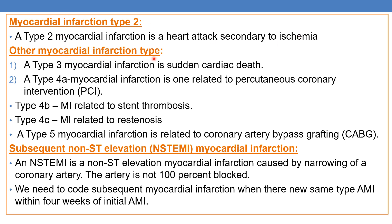Coming to other myocardial infarction types — they are Type 3, Type 4, and Type 5. Type 4 is subcategorized into three types. Type 3 myocardial infarction is a sudden cardiac death. Type 4 myocardial infarction is related to percutaneous coronary intervention (PCI). Type 4B is related to stent thrombosis. Type 4C is related to restenosis.